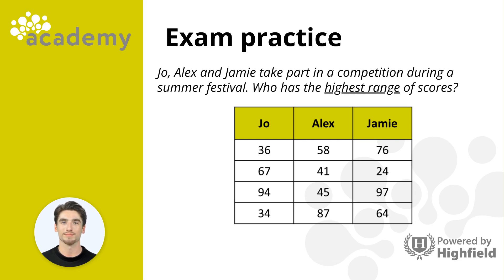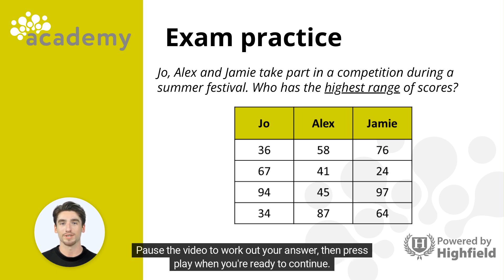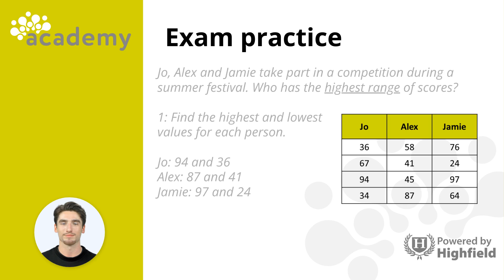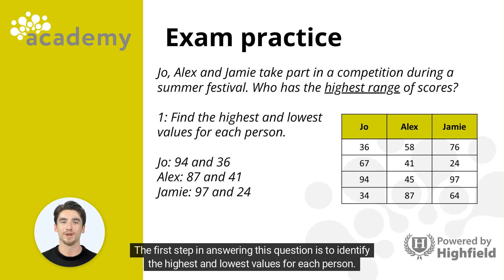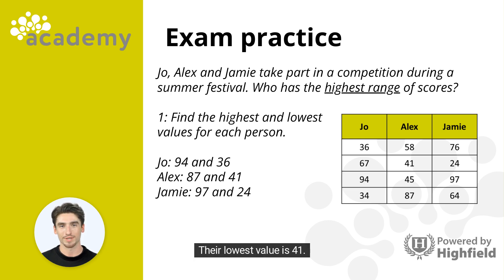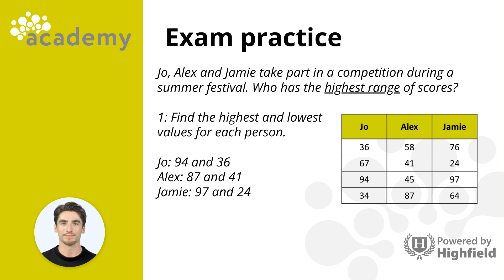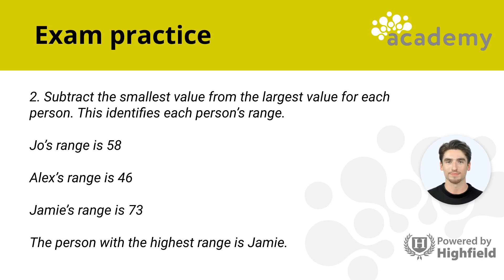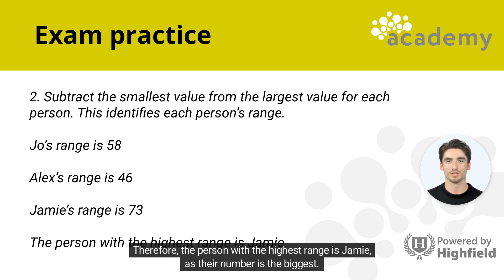Let's apply our learning from the session with an exam question. Identify the highest and lowest values for each person to calculate their range. Joe's highest value is 94 and lowest is 36, giving a range of 58. Alex's highest is 87 and lowest is 41, giving a range of 46. Jamie's highest is 97 and lowest is 24, giving a range of 73. Therefore, the person with the highest range is Jamie.